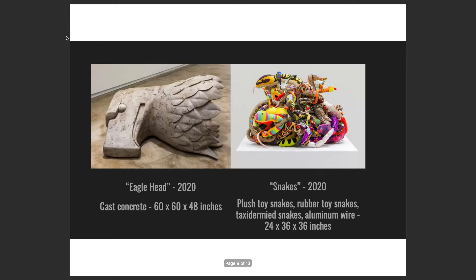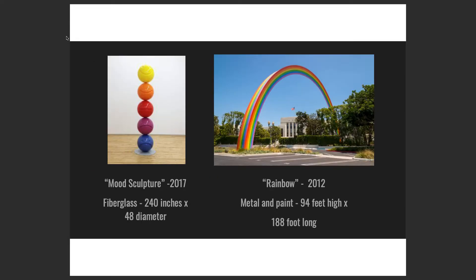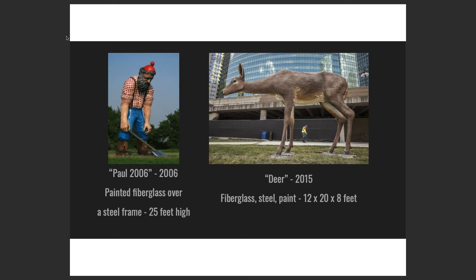'Eagle Head,' 2020, cast concrete. 'Snakes,' 2020 — plush toy snakes, rubber toy snakes, taxidermic snakes, aluminum wire — it's just a mix of snakes, that is wild. 'In Rainbow,' 2012, metal and paint — 188 feet long, that's crazy. On the left, 'Paul,' 2006, painted fiberglass over a steel frame — a sculpture of a depressed Paul Bunyan, which I find hilarious. And then 'Deer,' 2015, a giant deer. 'I,' 2007, fiberglass resin, oil paint, and steel. And 'Judy's Hand Pavilion,' 2018, fiberglass over a steel frame.